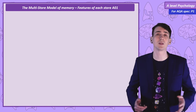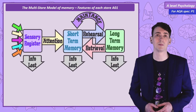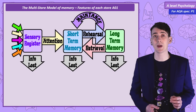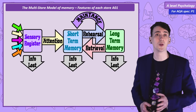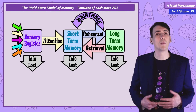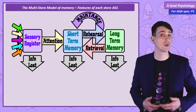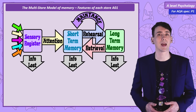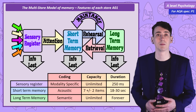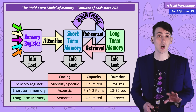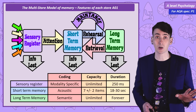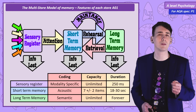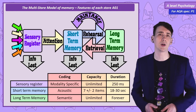So that's the multi-store model. We need to describe the model, the process of information passing through it, and the coding, capacity, and duration of each store. Here they all are in the table — you may want to copy down both the model and this table and make sure you can recall it from memory.